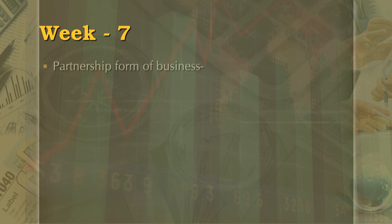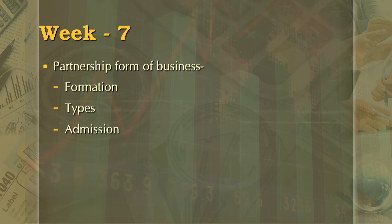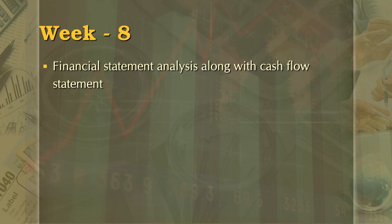Week 7 will deal with partnership form of business — its formation, types, admission of partner, retirement of partner, dissolution and the related accounting process. This course will conclude in the 8th week, where you will be taught the most vital aspect of the subject: financial statement analysis along with cash flow statement. All these sessions are concerned with the procedure of bookkeeping, but the last session will help you understand how to diagnose the health of any business using tools such as ratio analysis and cash flow analysis.